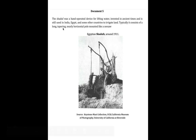Our last document has text as well as a picture. It says the Shaduf was a hand-operated device for lifting water invented in ancient times and is still used in India, Egypt, and other countries to irrigate land. It consists of a long, tapering, nearly horizontal pole mounted like a seesaw. This is actually a photograph of an Egyptian Shaduf from 1911, and it enables them to dip a bucket down to get water and more easily lift heavy amounts of water.